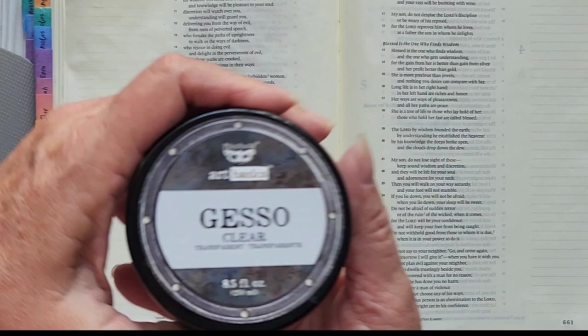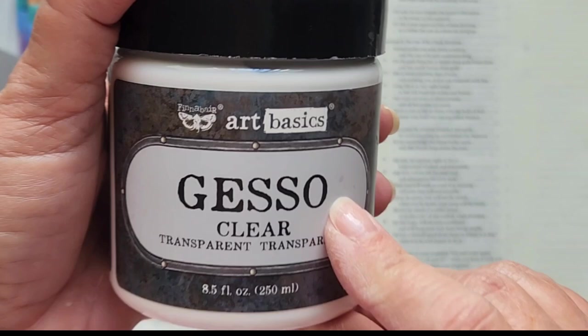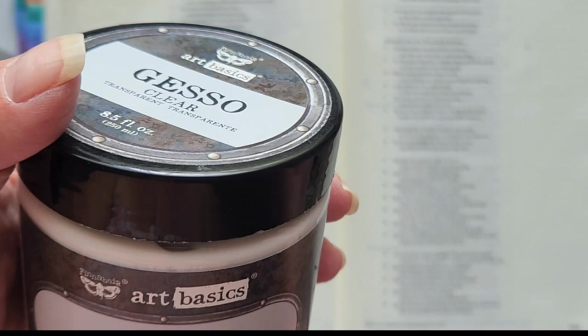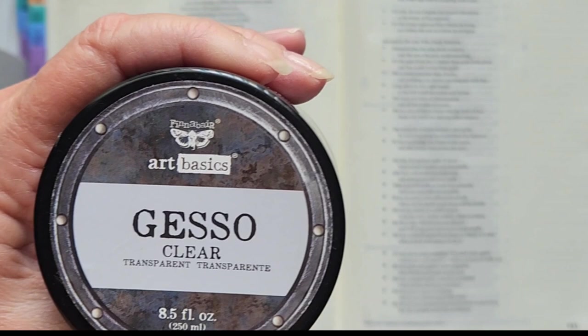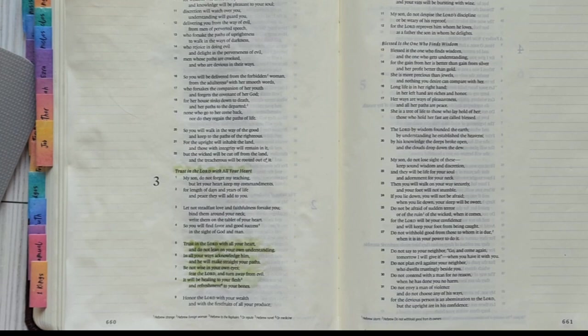And then I'm gonna get some white going here. I did put clear gesso, I love this, it is ultra fine. I got this from Amazon and this 8.5 fluid ounces will last you a long time. It is ultra fine and it is so smooth and beautiful, I absolutely love it.